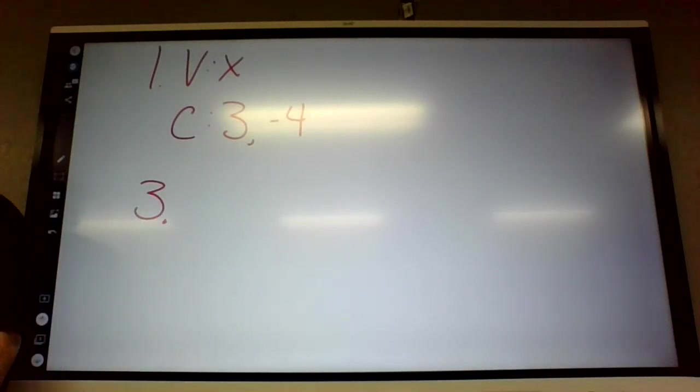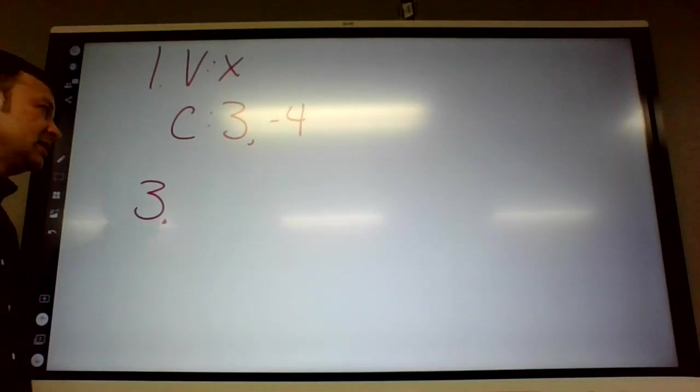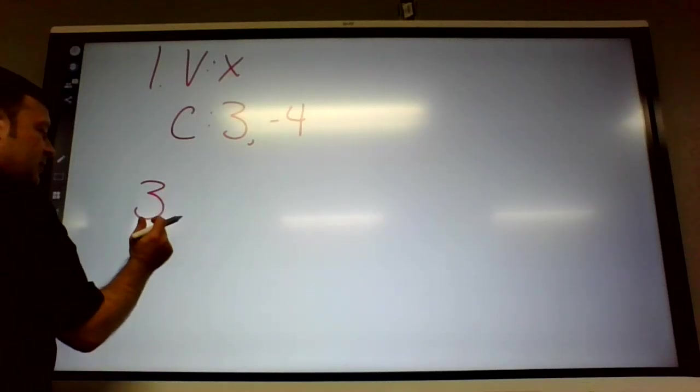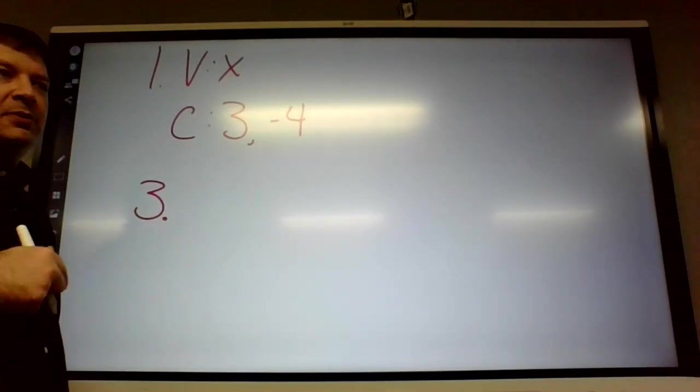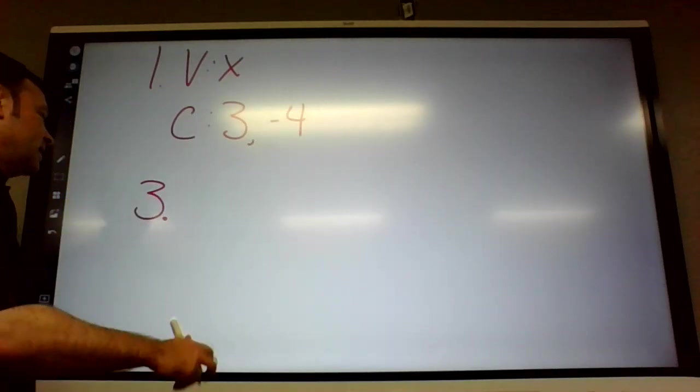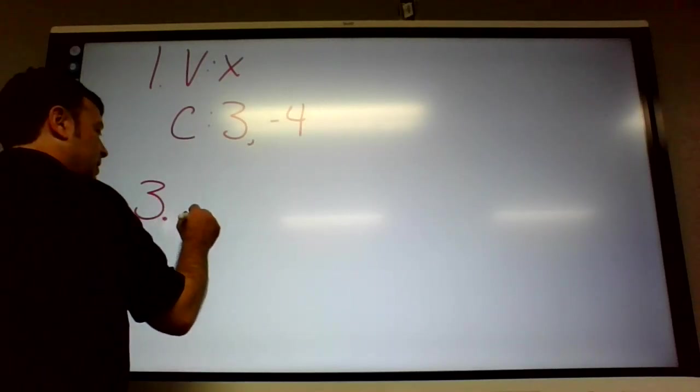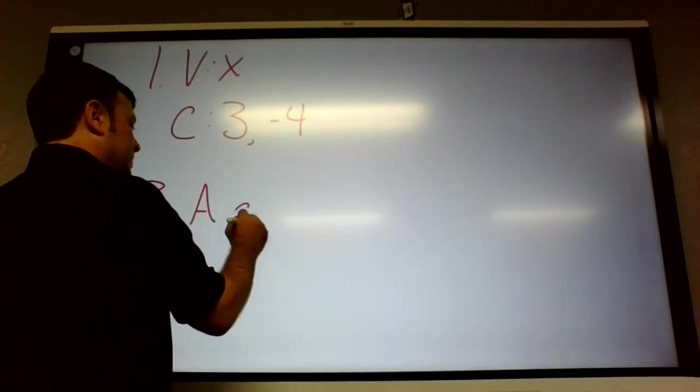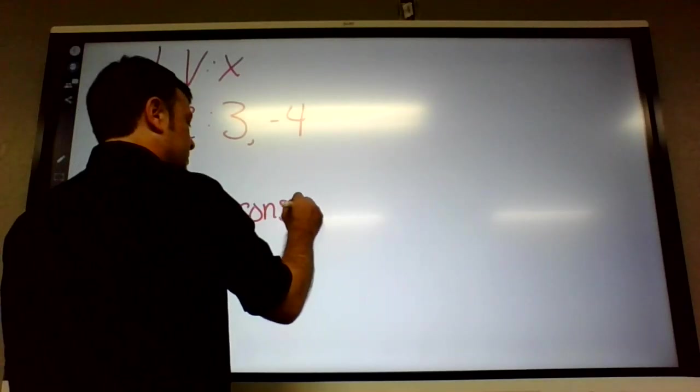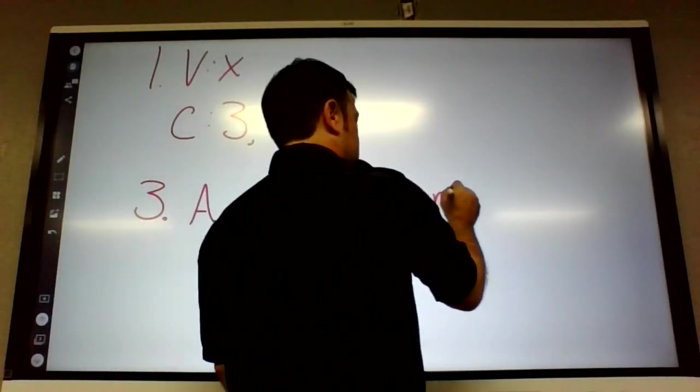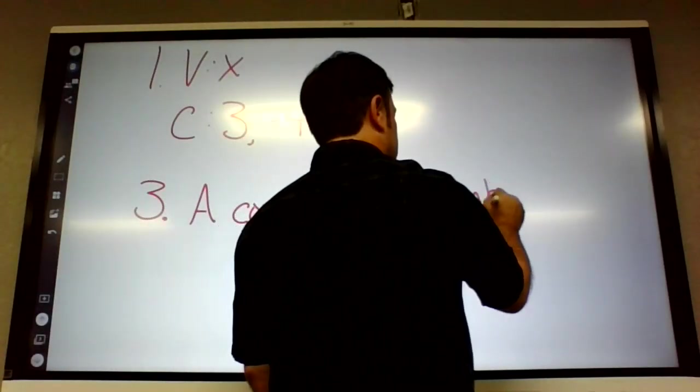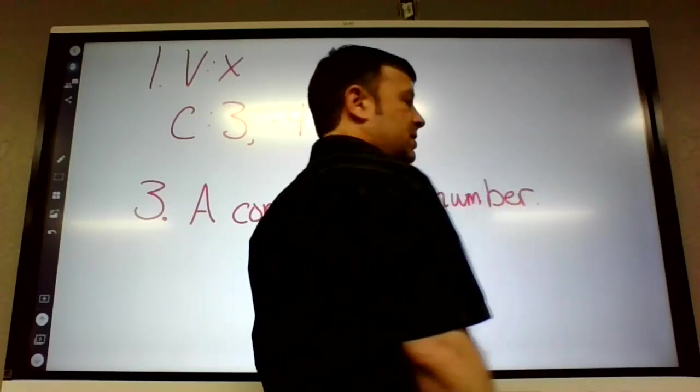Number three, explain the difference between a constant and a numerical coefficient. There's only one lesson where I talked about coefficients, and that was the book assignment when we did distributive property. But what is a constant? The constant is a what? Something that stays the same, but it's a number.